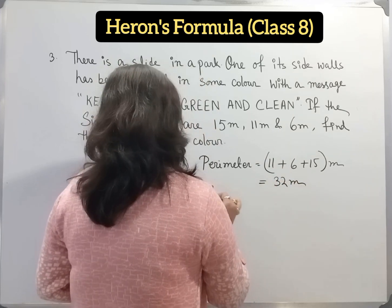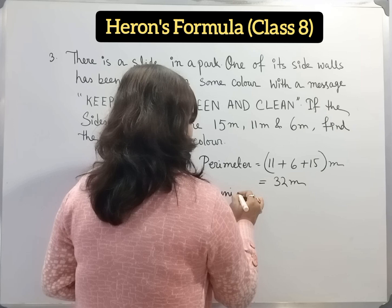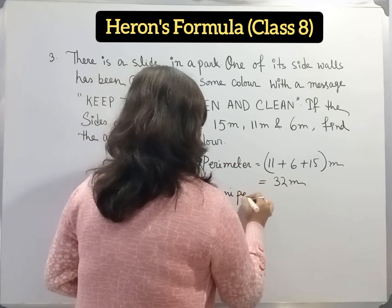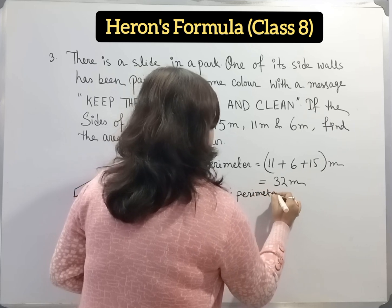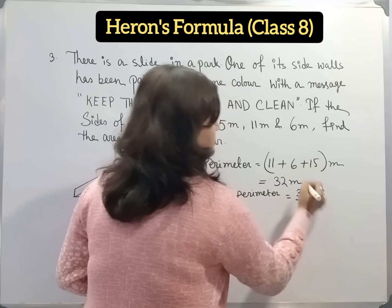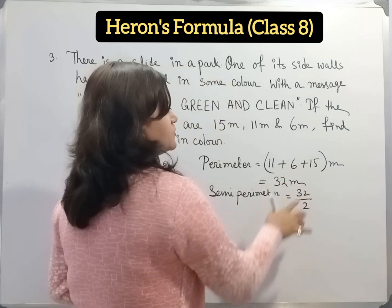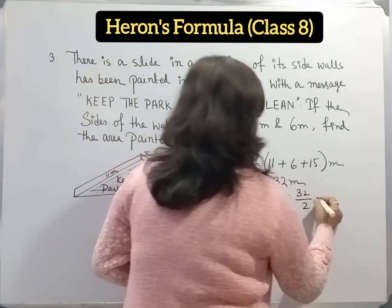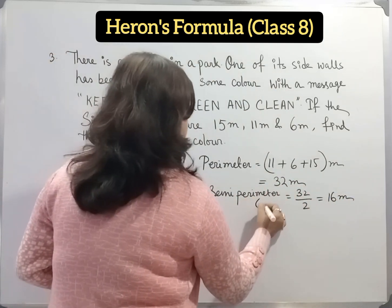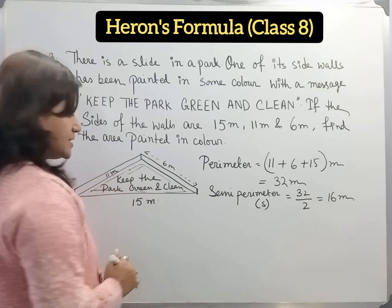Now we have to find out semi-perimeter. Semi-perimeter is perimeter by 2. We divide the perimeter by 2. Semi-perimeter equal to 32 by 2. Because perimeter is 32, that's why we divide perimeter by 2. It's equal to 16 meter. So semi-perimeter is denoted by S.